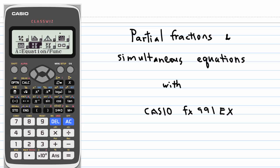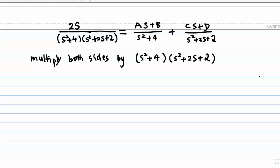This video will show you how to do partial fractions and simultaneous equations with the Casio fx-991EX. Suppose we want to do a partial fraction of 2x over (x² + 4)(x² + 2x + 2). That is equal to (ax + b)/(x² + 4) plus (cx + d)/(x² + 2x + 2).